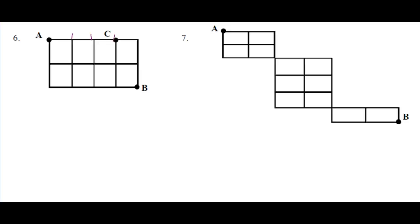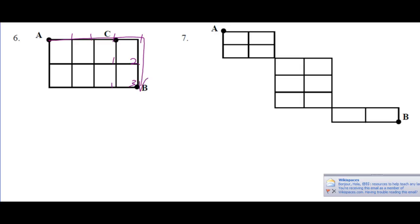A to B through C — you only have one path, you've got to go straight across to C. Then the numbers propagate to the right and down from C: one, one, two; one along here; one and one is two; two and one is three. You could list those — here's one way going like this, here's another, and here's the third. With three paths it's pretty easy to draw them out.